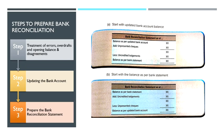For the first step, you need to take a look at the treatment of errors, overdraft, and opening balance, and disagreements. Which means, first of all, you have to look at additional information — what errors have occurred. After you have looked at that, then you can update the bank account.